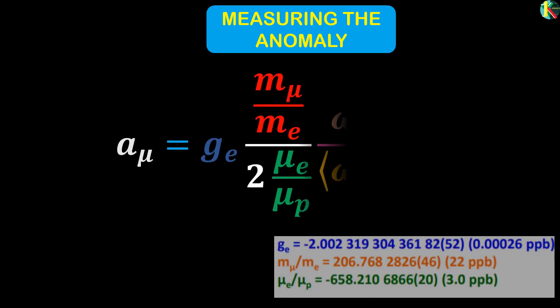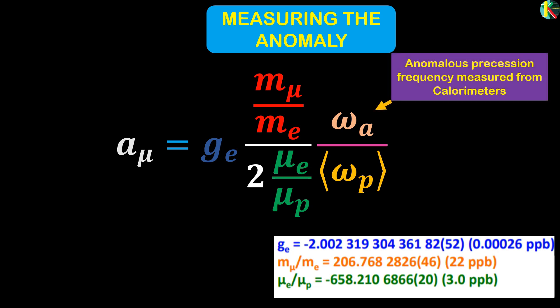The anomaly can be written as the ratio of two frequencies measured to high precision by the experiment. The first is the measurement of the anomalous precession omega-a derived from analysis of the calorimeter response.